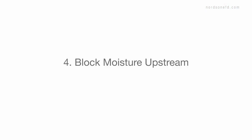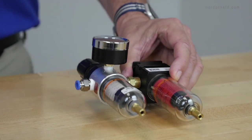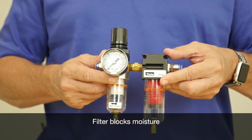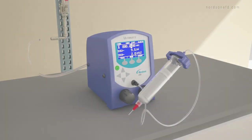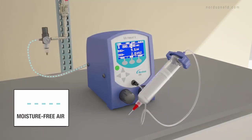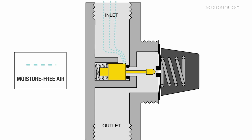Fourth, block moisture upstream. Install a coalescing filter regulator at your plant air supply. This removes moisture from compressed air. It also blocks moisture from contacting your CA and prevents curing.